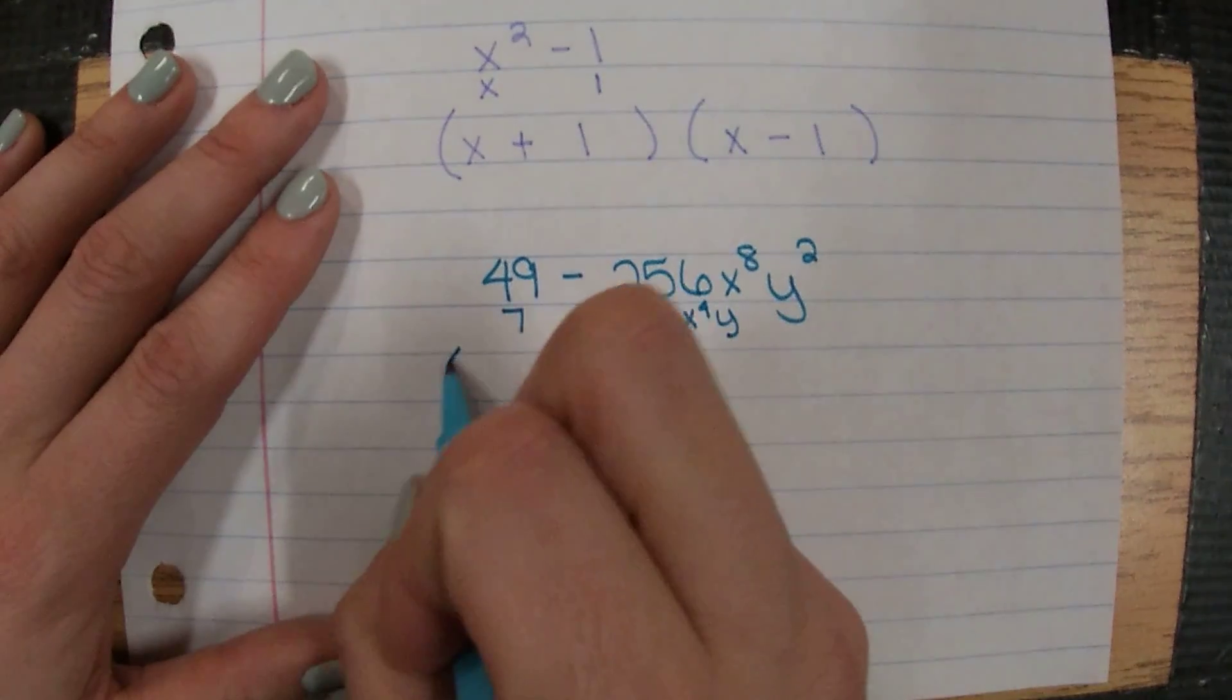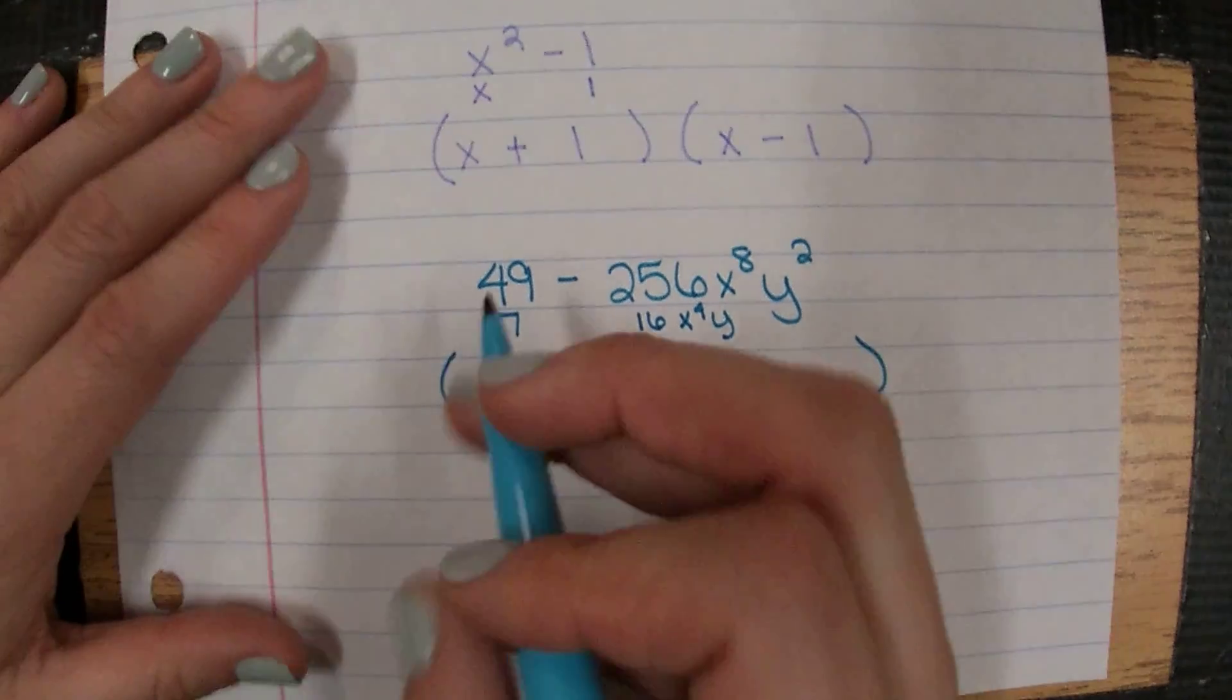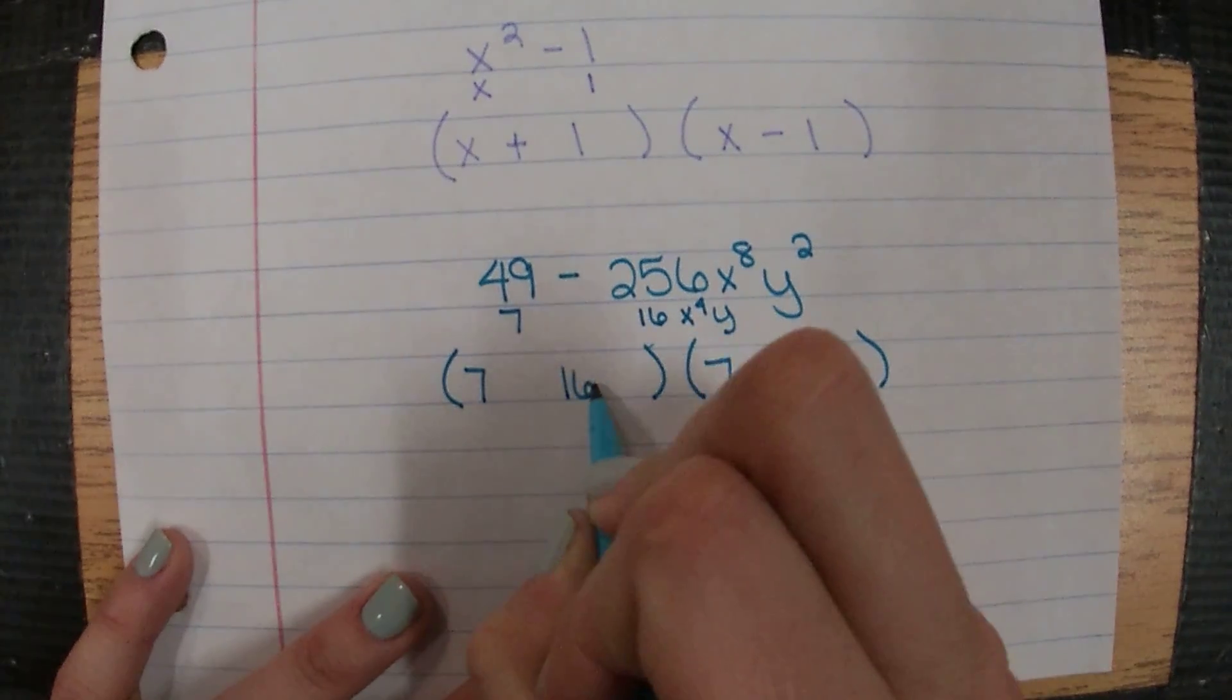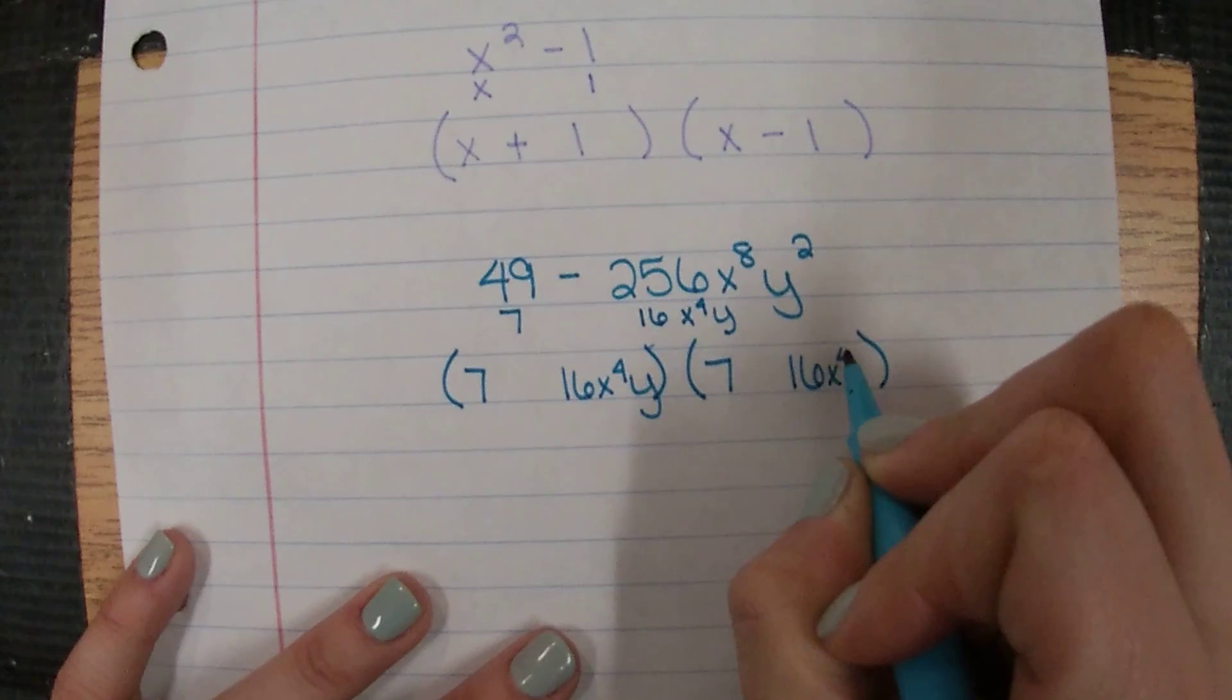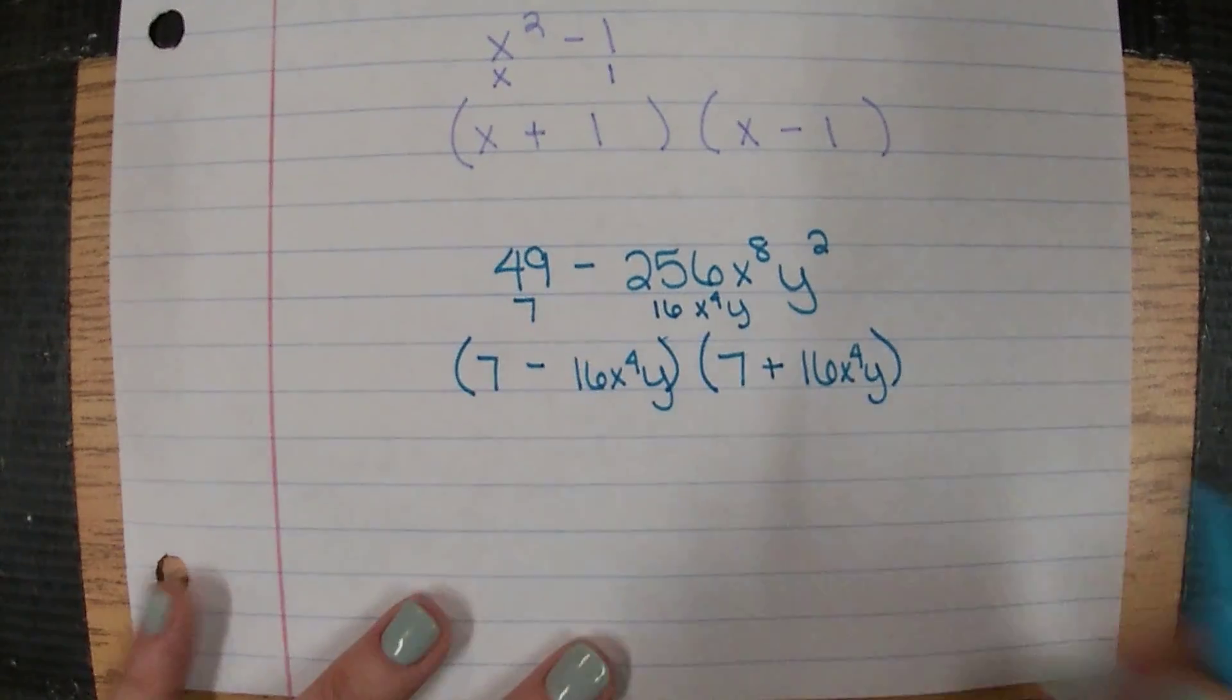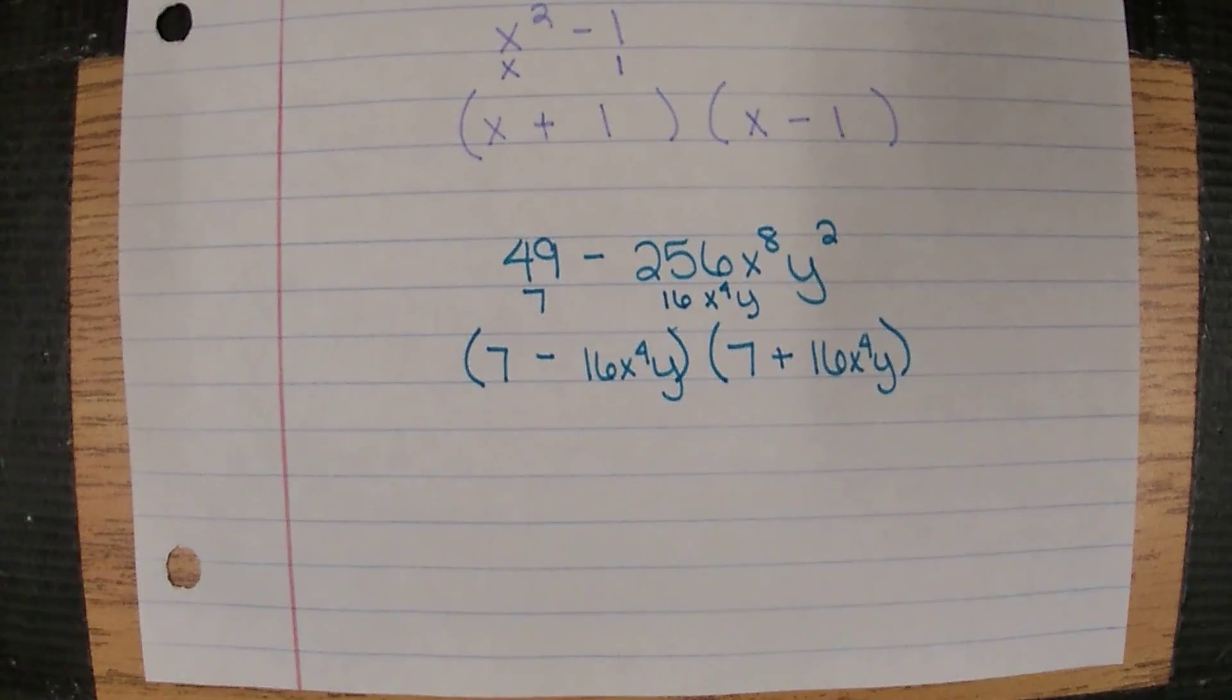So we have two binomials. Do not change the order, because the 49 is first, the 7 has to be first. That 16x to the fourth y has to be second. And then one gets addition and one gets subtraction. It doesn't matter which order, so this time I'm just going to put the subtraction first just to show it doesn't matter whether we have that addition or subtraction first.